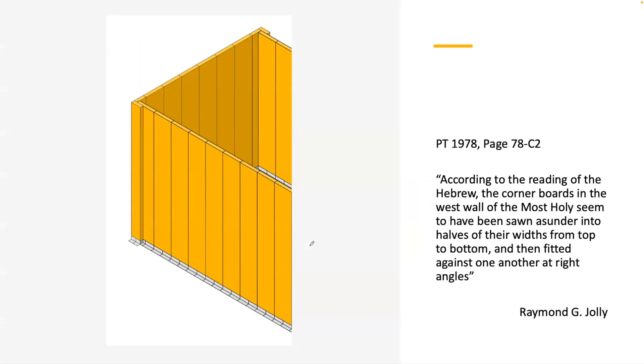Brother Jolly says, according to the reading of the Hebrew, the corner boards in the west wall of the Most Holy seem to have been sawn asunder into halves of their widths from top to bottom and then fitted against one another at right angles.